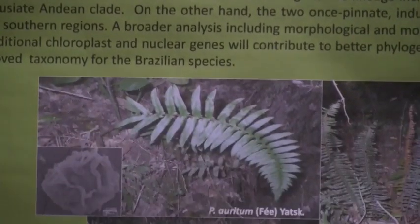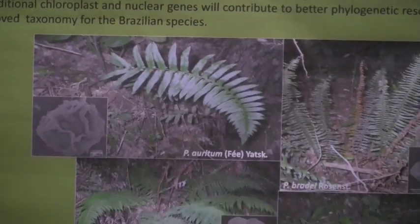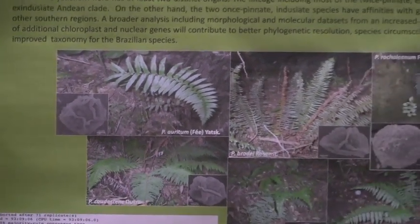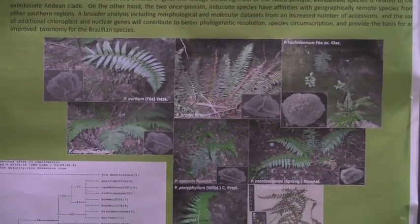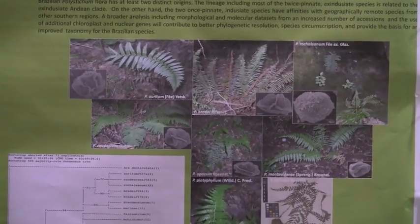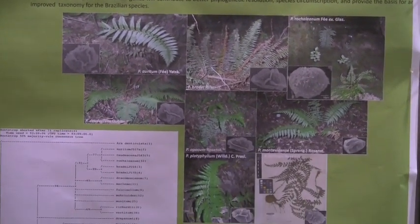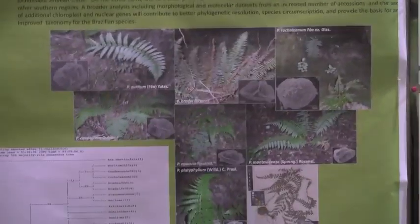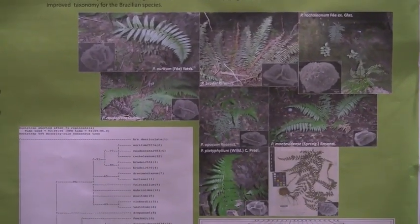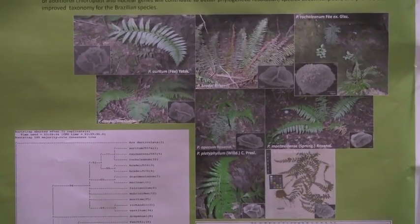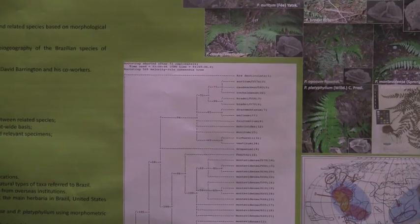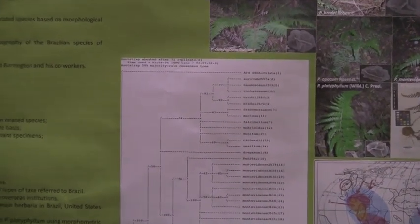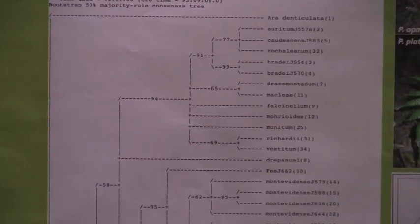I'm doing a monograph — I'm going to do anatomy and spore images, morphometrics, and molecular work. This tree is based only on chloroplast DNA: the rbcL, rps4, and trnF.